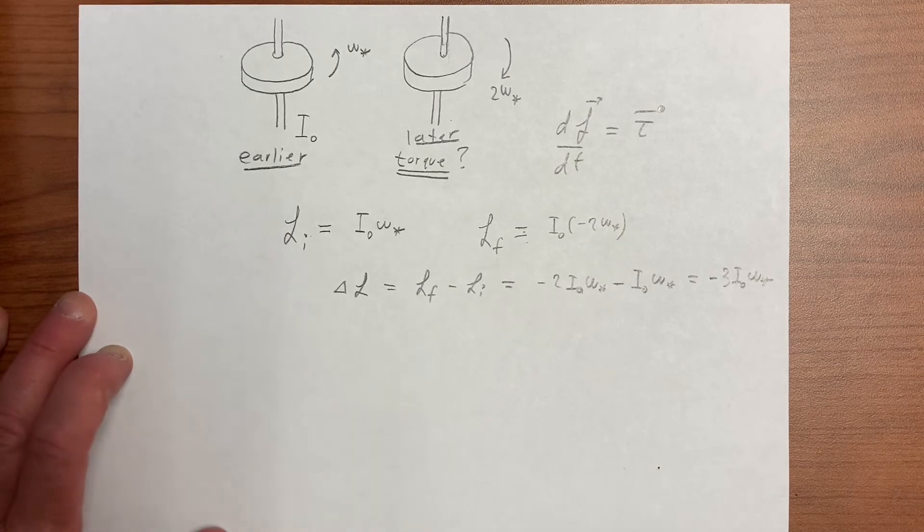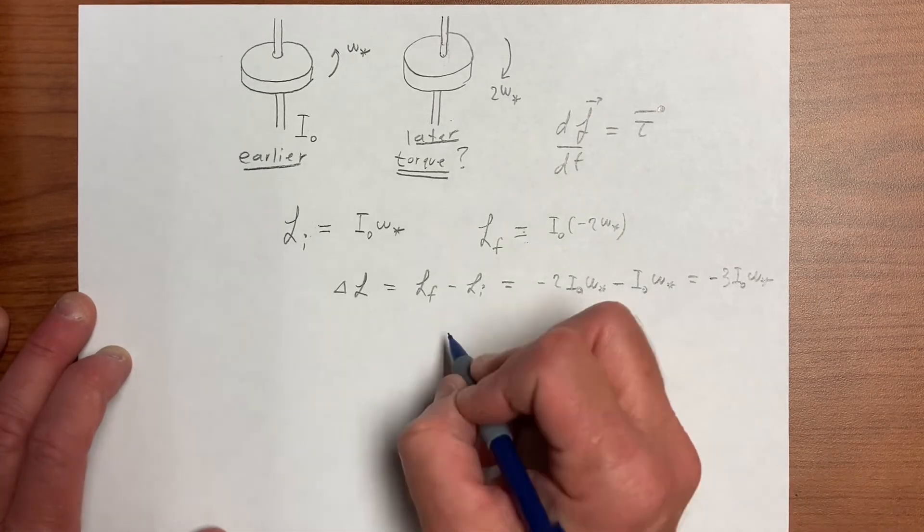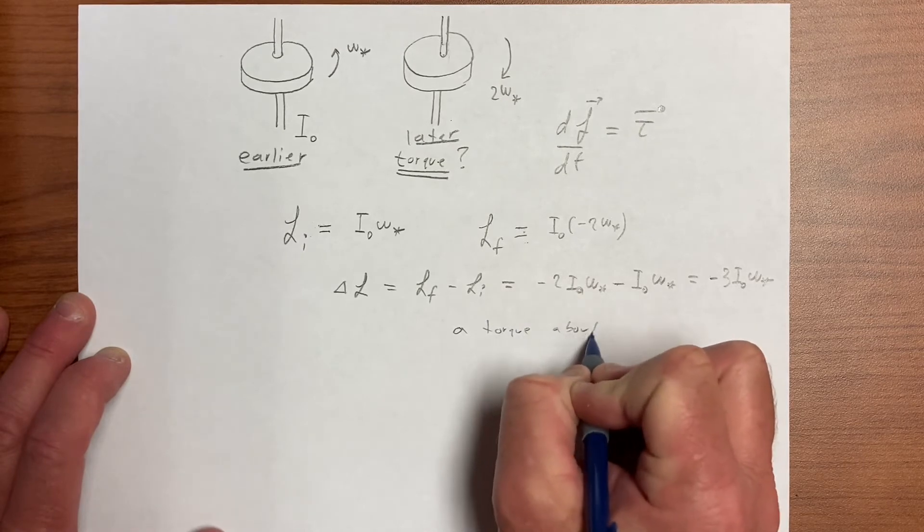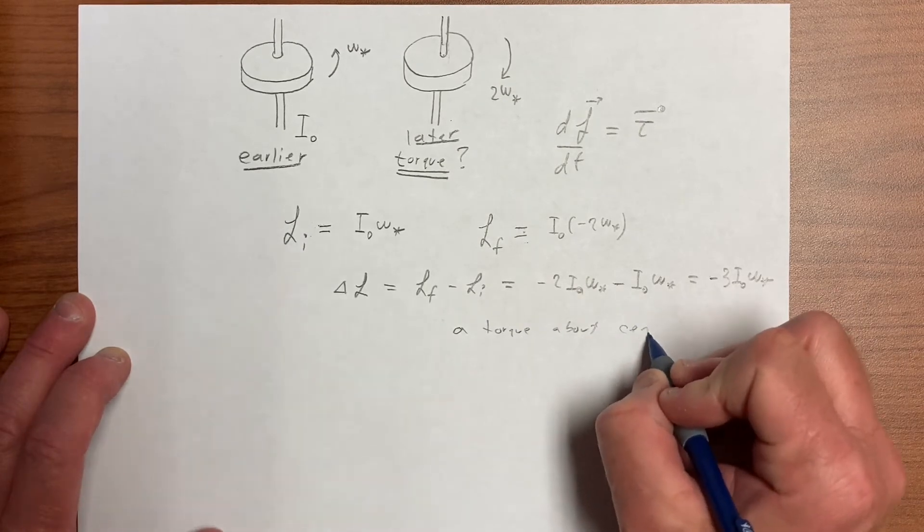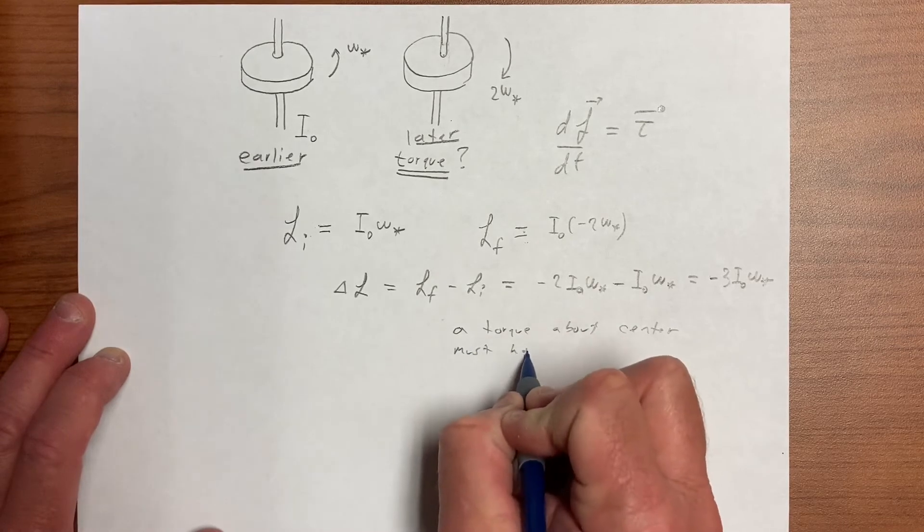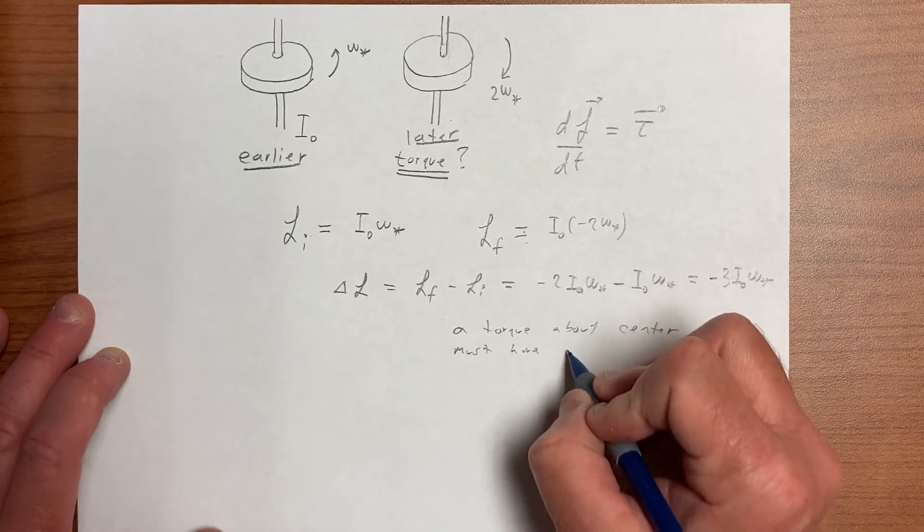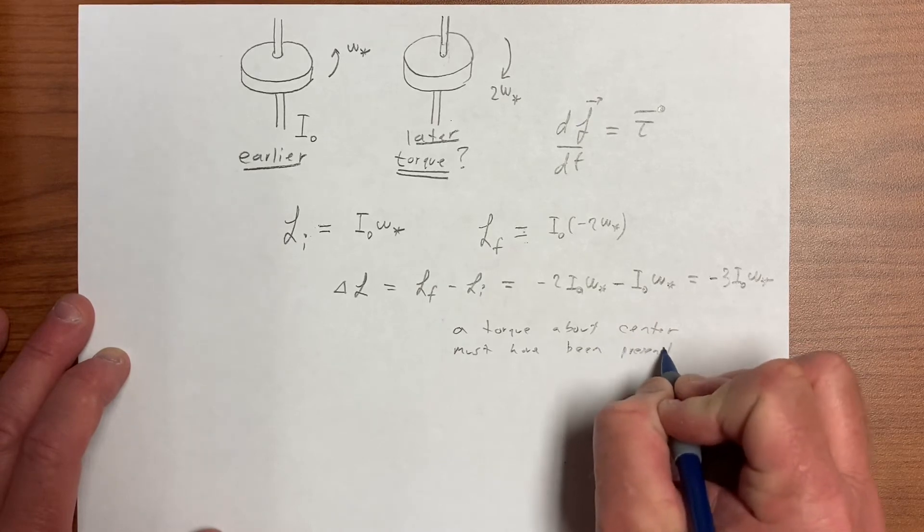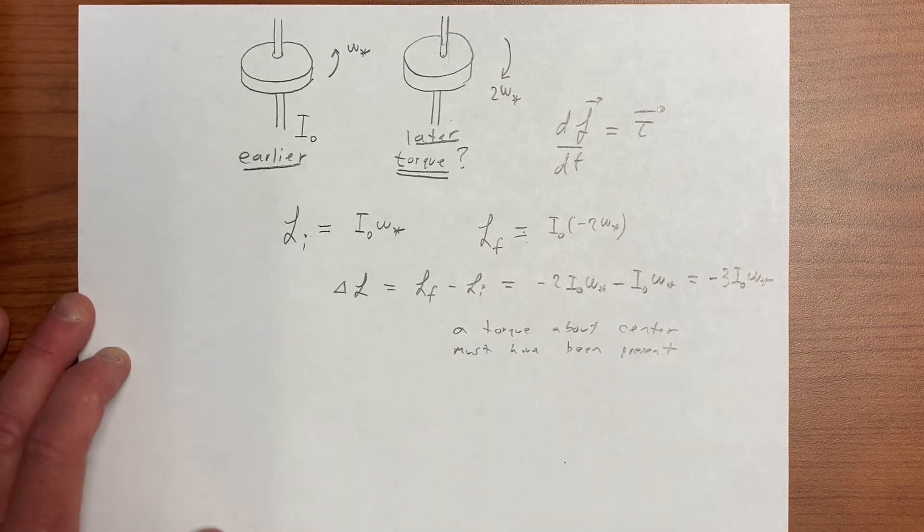And a torque about center must have been present to create that difference in the angular momentum.